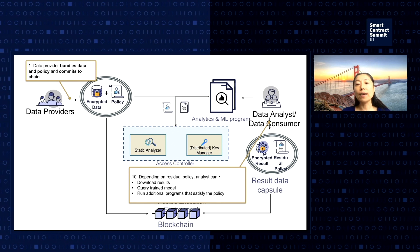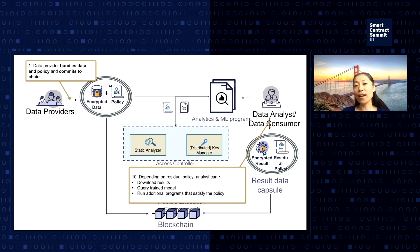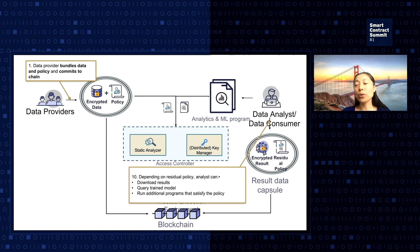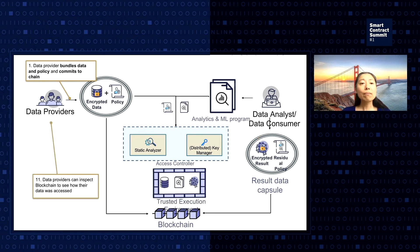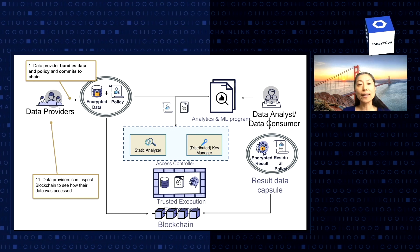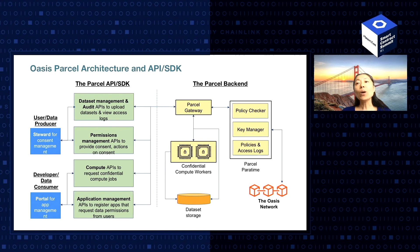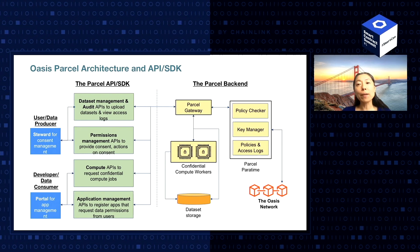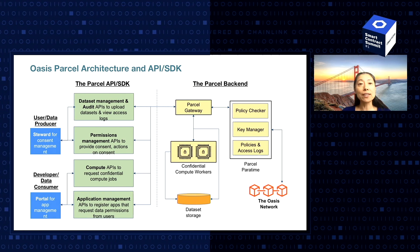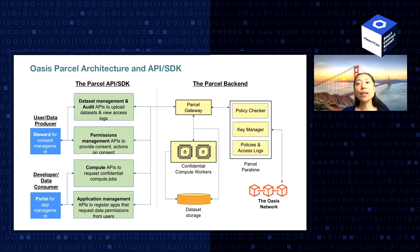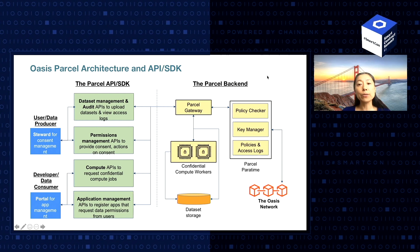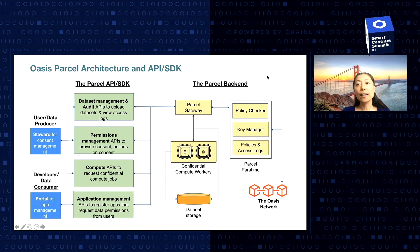The program generates a result data capsule with results encrypted and the appropriate residual policy attached. This information is also committed to the blockchain. The data consumer can then receive the results and, depending on the residual policy, view the results or query a trained machine learning model. The data provider can inspect the blockchain to see how their data was accessed. Overall, this is a decentralized data governance platform enabling the desired capabilities. At Oasis, we have built the Parcel architecture to enable this decentralized data governance platform.